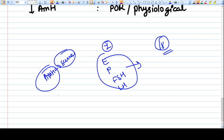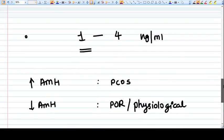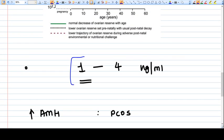That's why AMH becomes a stable marker of ovarian reserve. Now the normal level of AMH is one to four nanogram per ml.